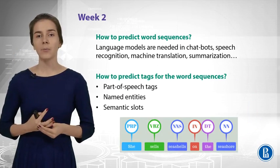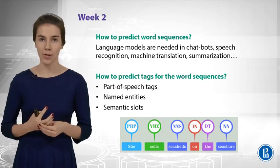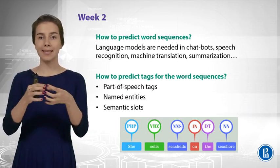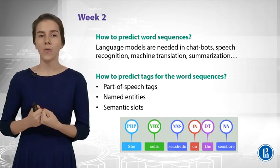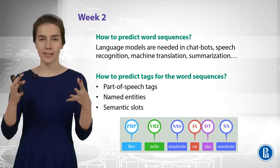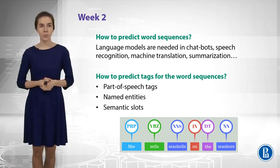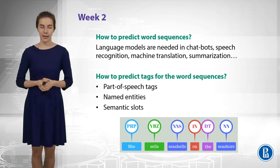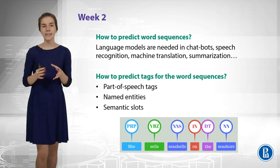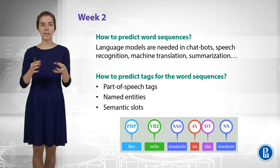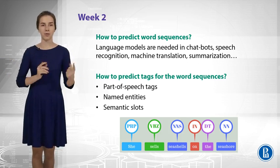The next week will be about representing text not as a bag of words, but as a sequence. What can you do when you represent text as a sequence of words? One task would be language modeling. Language models are about predicting the probabilities of the next words given some previous words.